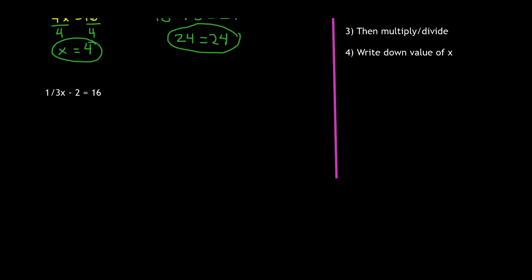This one deals with division and subtraction. So in this case, we have 1/3 x minus 2 is equal to 16. Remember, first you have to do addition or subtraction. And we're trying to get x by itself. So we're going to have to eliminate the minus 2 by adding 2 to both sides. So we're left with 1/3 x is equal to 18.